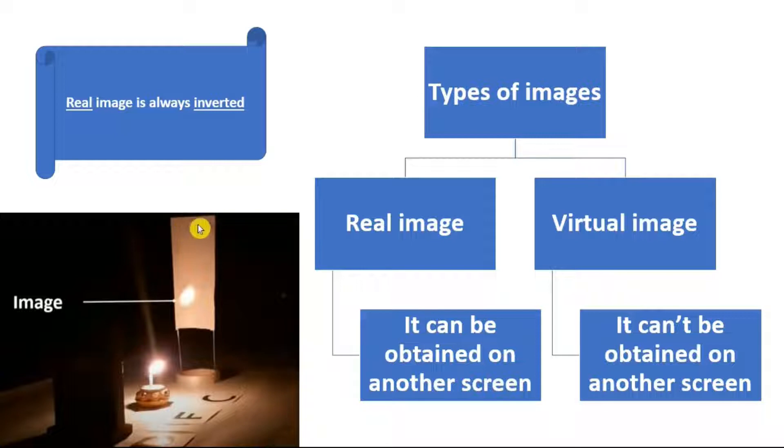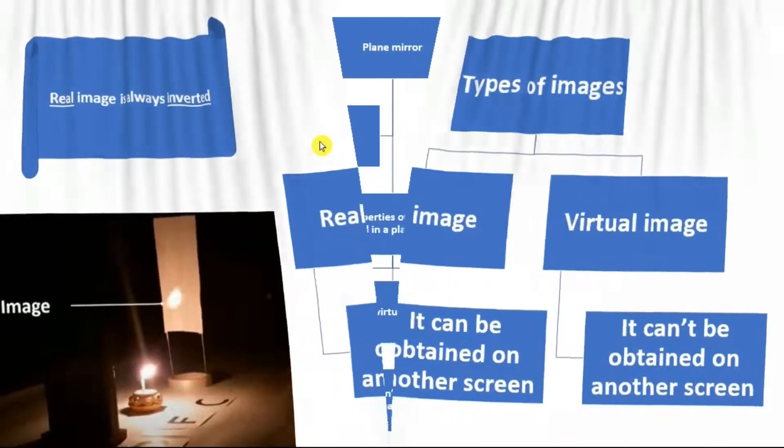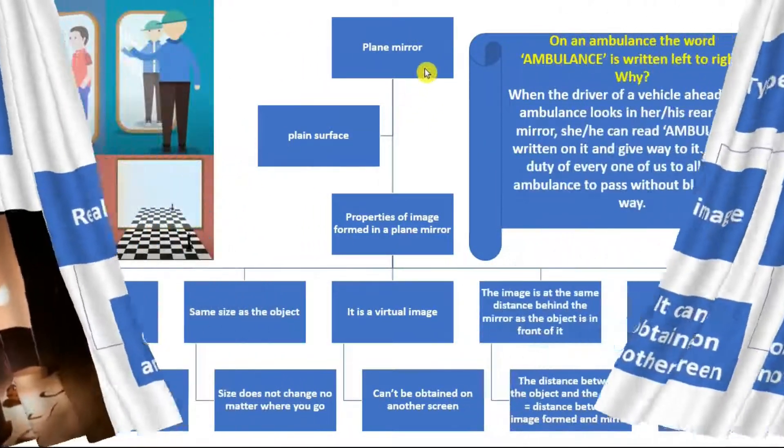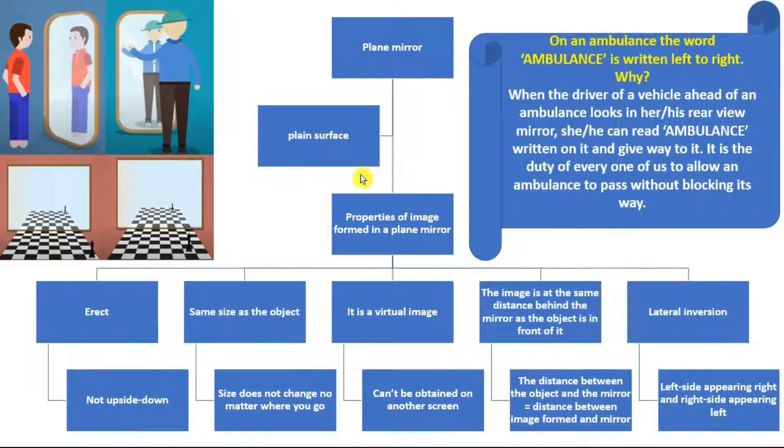The virtual image cannot be obtained on another screen. So it will be seen only on the mirror not anywhere else. Then we have a fact that real image is always inverted and virtual image is always erect. Very easy to classify from this fact. Then we have the plane mirror which is basically a plain shiny surface.